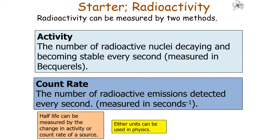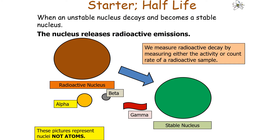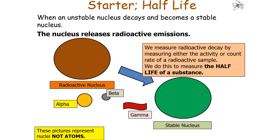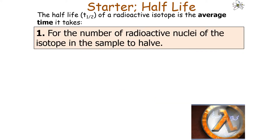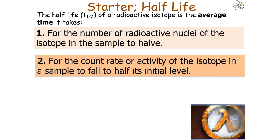Either unit can be used in physics. We measure radioactive decay by measuring either the activity or the count rate of a radioactive sample to determine the half-life. The half-life of a radioactive isotope is the average time it takes for the number of radioactive nuclei in the sample to halve, or for the count rate or activity to fall to half its initial level.